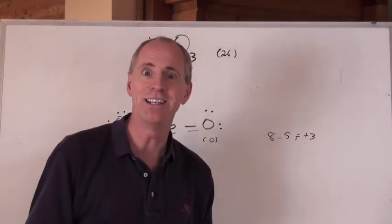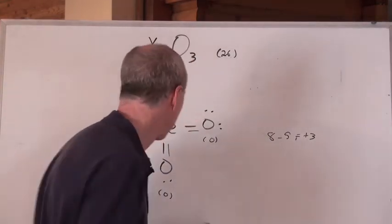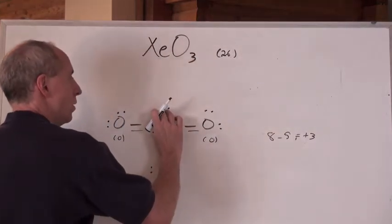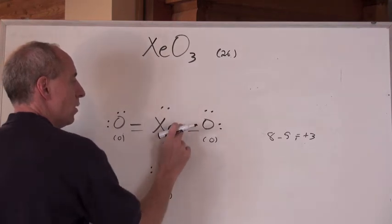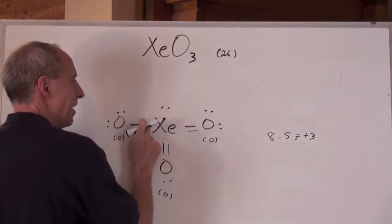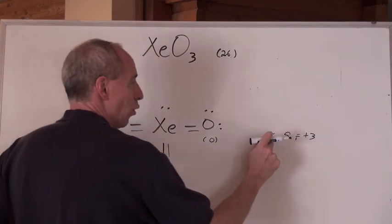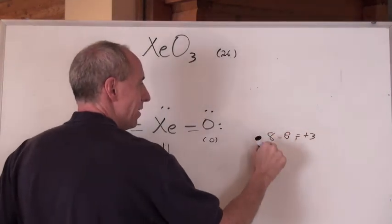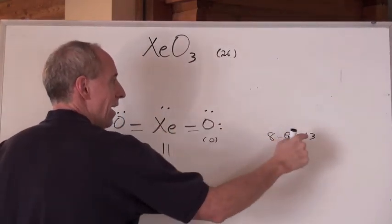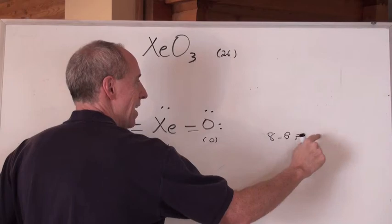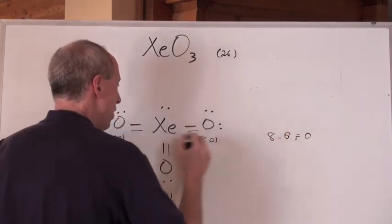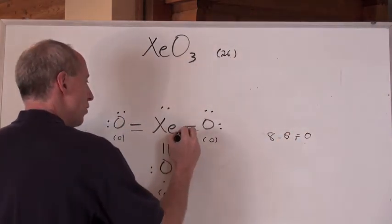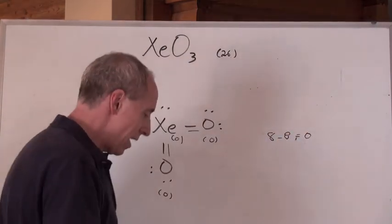And look at the xenon in the middle. It's got 2 lone pair electrons. And now all the bonds: 3, 4, 5, 6, 7, 8. It's normally in group 8, and you assigned it 8. 8 minus 8 is 0 — it's a 0. Everything's a 0.